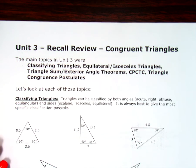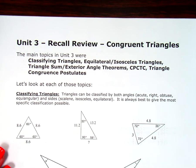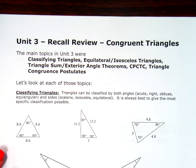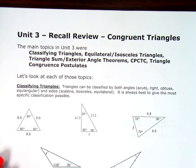In this video, we're going to focus on classifying triangles. Triangles can be classified both by their angles as acute, right, obtuse, or equiangular, and by their sides as scalene, isosceles, or equilateral. It's always best to give the most specific classification possible.